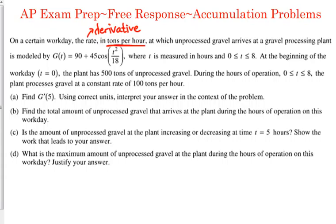The rate at which unprocessed gravel arrives at a gravel processing plant is modeled by this function, where T is measured in hours between zero and eight. At the beginning of the workday, T equals zero, the plant has 500 tons of unprocessed gravel — that is an initial condition you're usually going to use somewhere in the problem. During the hours of operation from zero to eight, the plant processes gravel at a constant rate of 100 tons per hour. So we've got two different rates: we're adding and we're processing.